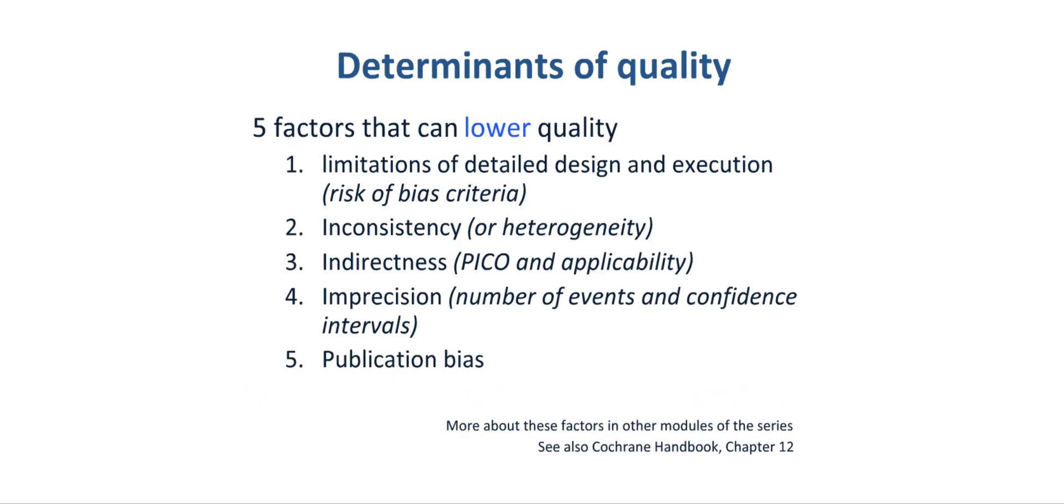There are five factors that can lower our confidence in the estimate of an effect. In other words, five factors that can lower the quality of evidence. There will be individual modules for how to use the following criteria that determine this quality of evidence, and they are also explained in the Cochrane Handbook in more detail as well. The first factor is limitations in the detailed design and execution of studies. In other words, the risk of bias criteria.